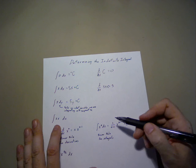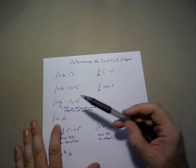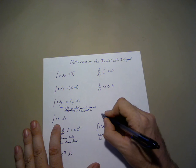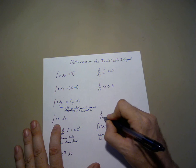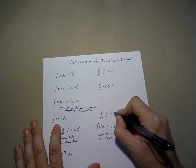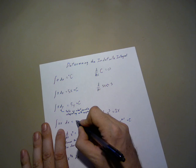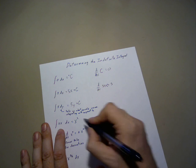Moving on, we have 2x dx as our integral. We recall that the derivative of x squared equals 2x. Therefore, we can say that the integral is x squared. We also need to remember to add plus c.